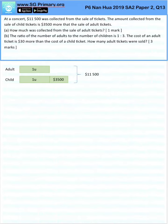You can see this in the model that I've drawn. So adult is one unit, child is one unit and $3,500, and together it's $11,500.